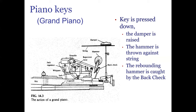At the factory they tease the felt hammer with needles to achieve the right amount of softness. Ultimately: pressing the key lifts the damper, throws the hammer against the string, and the hammer bounces back and is caught by the back check. That's all you really need to know about the mechanism.